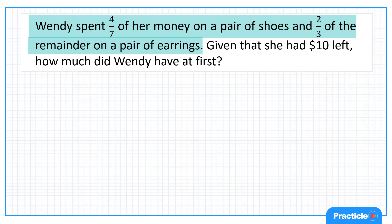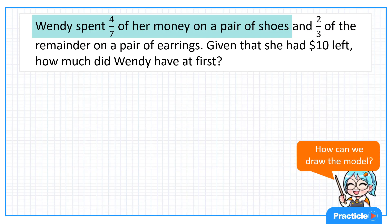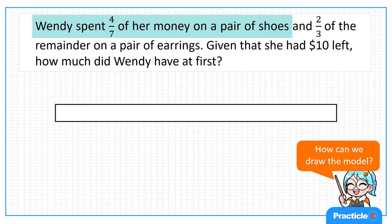First, we are given that Wendy spent 4/7 of her money on a pair of shoes. Do you know how to draw the model for this? Since you are looking at the amount of money that Wendy spent, let's draw a bar to represent the amount of money that Wendy had at first. Do we know what fraction of it she spent on the shoes?